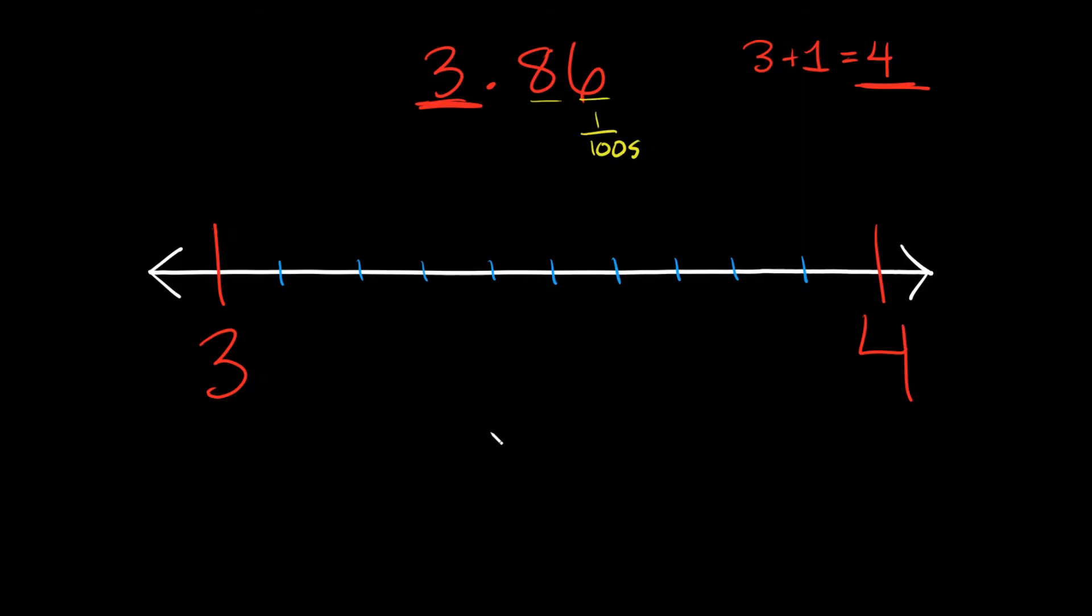So remember, this represents counting by 10s. So if I wanted to label these, this would be 3.10, this would be 3.20, 3.30, 3.40, 3.50, 3.60, 3.70, 3.80, 3.90, and then this would be 4.00, or just 4. Now all we have to do is plot our point.